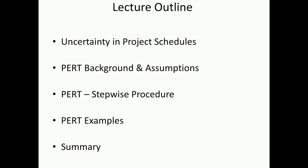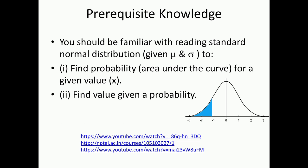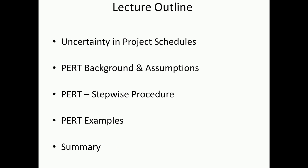In this lecture, we are going to look at probabilistic scheduling. We will be primarily looking at PERT as a method of probabilistic scheduling, but we will also cover some broader aspects of how to include probability and uncertainty in schedules. The outline of the lecture is as follows: we will first look at uncertainty in general and in project schedules, then go to PERT, the background and assumptions. We will go through a stepwise procedure to do PERT, then go on to an example, and finally summarize.